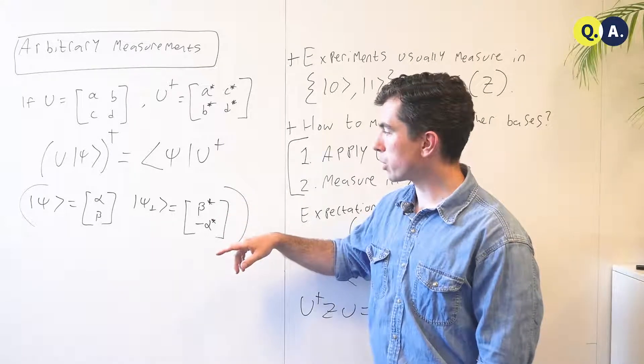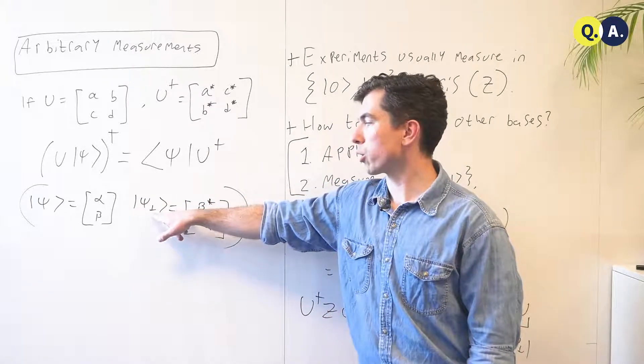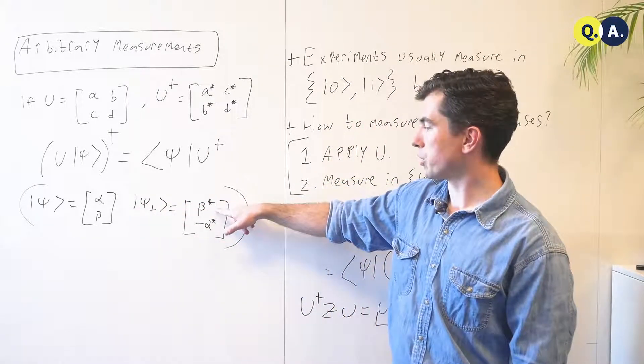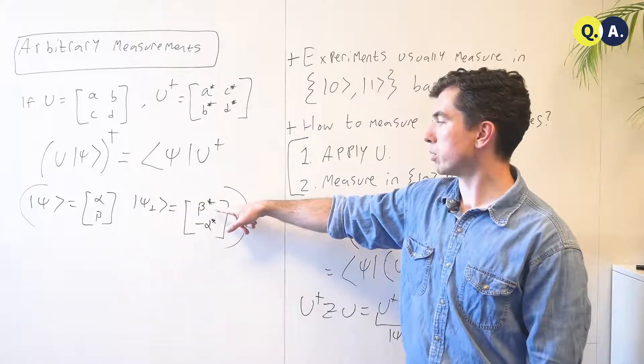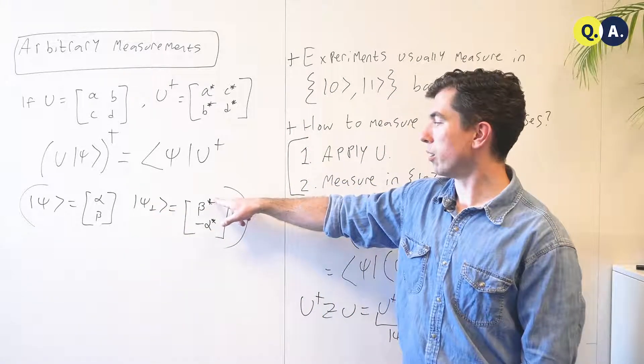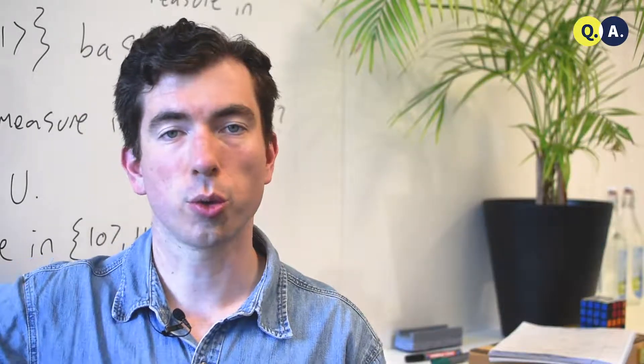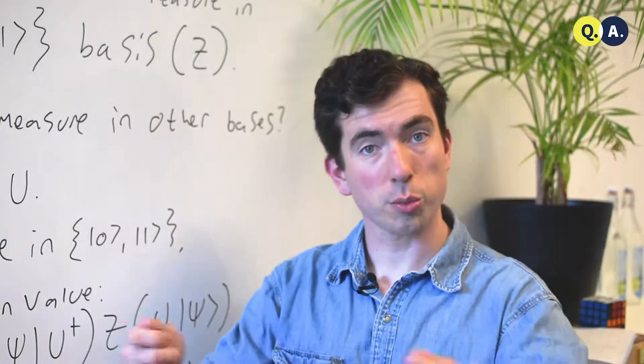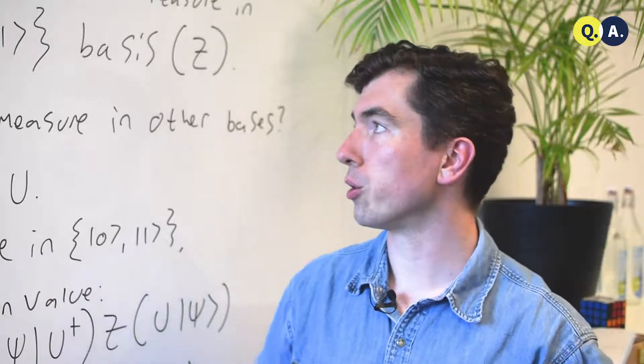There's also another construction that I'd like to use, which is that for every state psi, there's another state which I'll call psi perp, which consists of these coefficients. So if psi is alpha beta, psi perp is the conjugate of beta minus the conjugate of alpha, and these states are by construction orthogonal, which you can also see just by taking the inner product and seeing that it's always zero, regardless of what alpha and beta are.